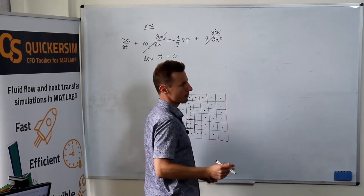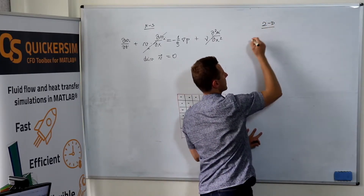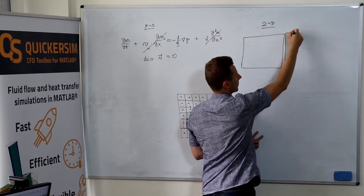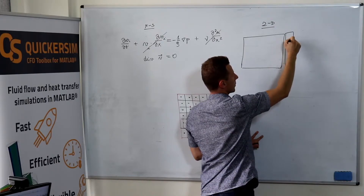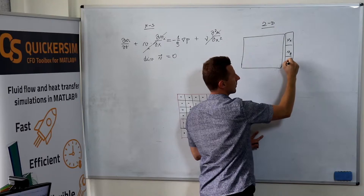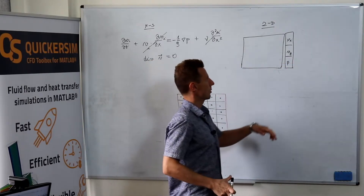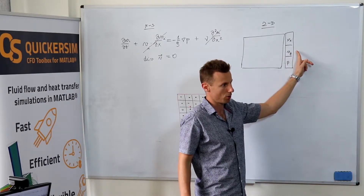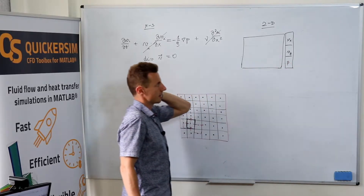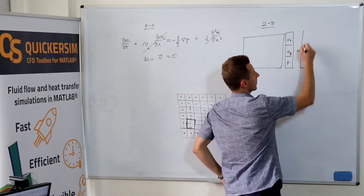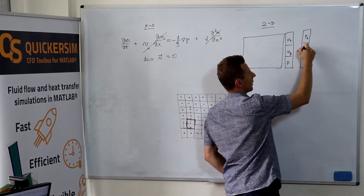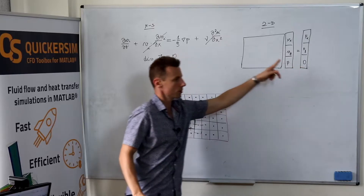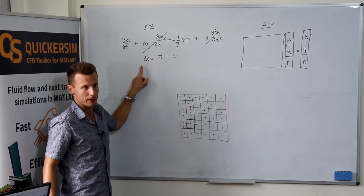There will be a problem with pressure. Can you imagine the matrix structure? Let's imagine the 2D case. We want to construct the solution vector as all the vx components, then y velocity components at all the nodes, and then pressures at all the cells. The right-hand side vector has some momentum sources, and zeros for the continuity constraint.